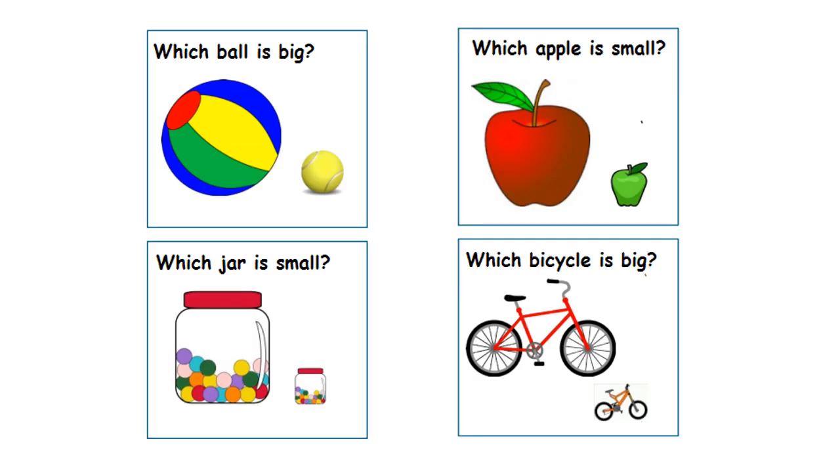Let's sort big and small objects. Which ball is big? Correct! The colored ball is big. Which apple is small? Yes! The green apple is small.